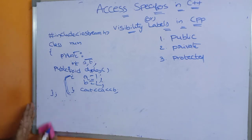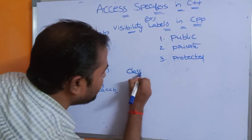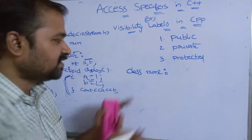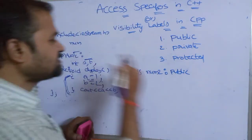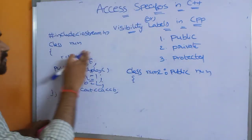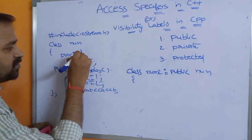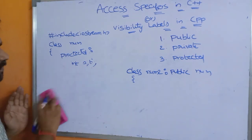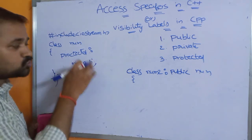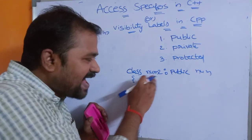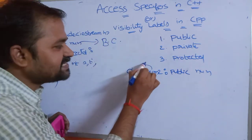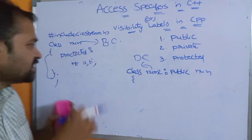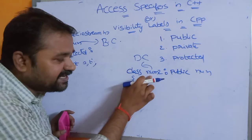To discuss the protected access specifier, we need to create a derived class. We have base class num with two protected member variables a and b. We create a new class num2 as the derived class using the syntax: class num2 : public num. The protected members of the base class can be accessed in the derived class as well. So a and b from class num become accessible inside class num2.